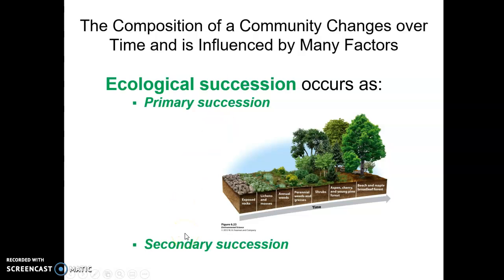There's also secondary succession, which occurs after primary succession has already happened. You may have reached some point along the primary succession line — maybe even a broadleaf forest — and then something major happens, like a volcanic eruption, a large fire, or the building of a city that knocks down trees and paves over the land. After that, because there's already deeper soil, the community that occurs through secondary succession won't follow the same progression as the initial primary succession.